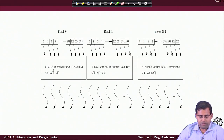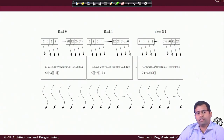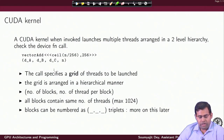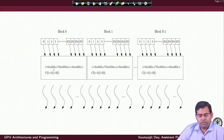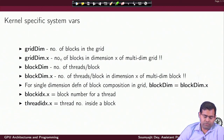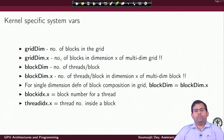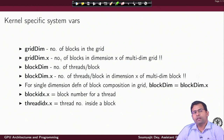With this background, we have a clear understanding of how vector addition is done in parallel using a simple CUDA program. Now let us understand this notion of thread and block definition in more detail with respect to CUDA syntax. The packing of threads together is defined as a grid; the grid is divided into blocks, and inside each block there are a number of threads per block.